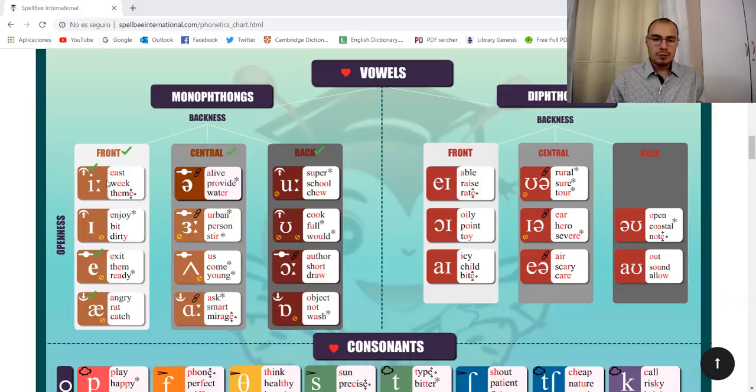What else do we have? Here we have a colon symbol. That means if you have a colon, that vowel is a long vowel. So we have here the long vowels. And the other ones are the short vowels.